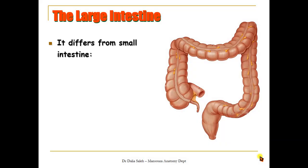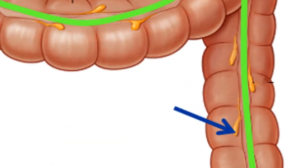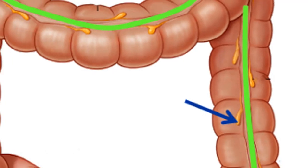The large intestine differs from the small intestine in several ways. It has a larger lumen and shorter length. From inside, it has no villi like the small intestine. The smooth muscles of the large intestine are arranged in longitudinal bands at its outer wall, called taenia coli, which are not seen on the small intestine. The large intestine also has sacculations or haustra, while the small intestine does not. Additionally, fat-filled extensions of the peritoneum called epiploic appendages are visible on the large intestine.